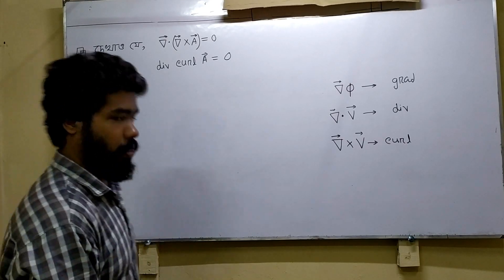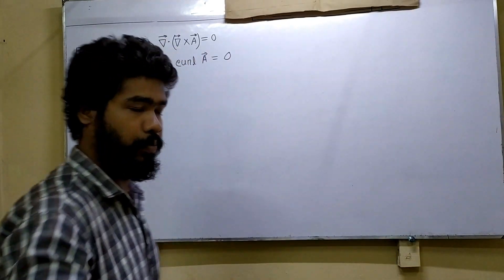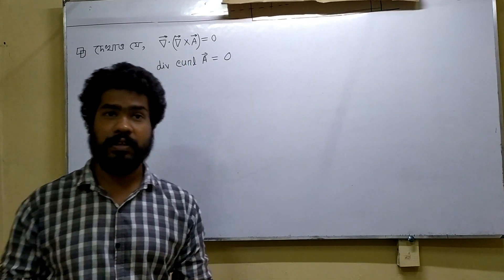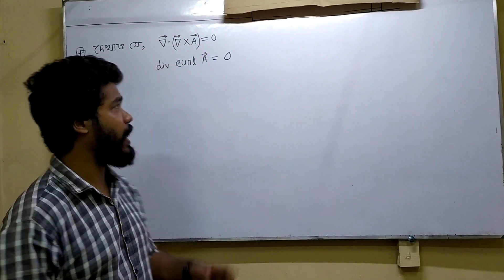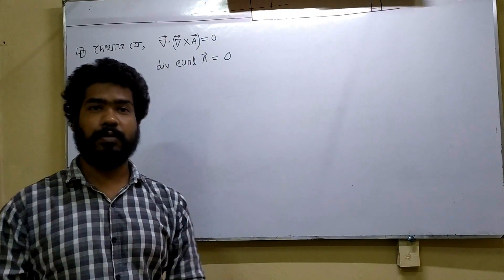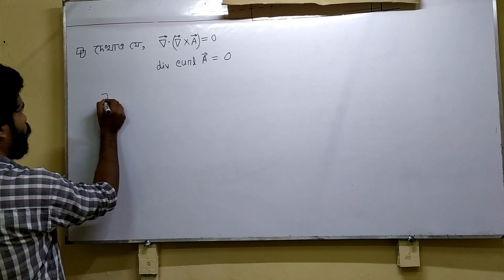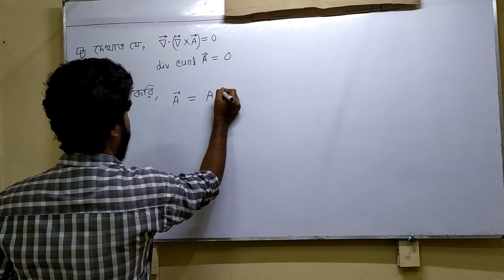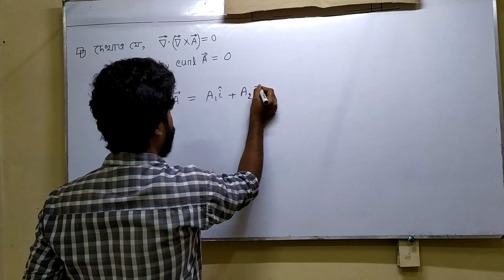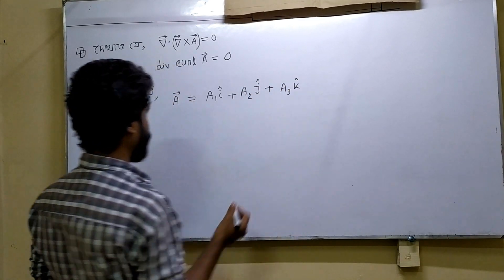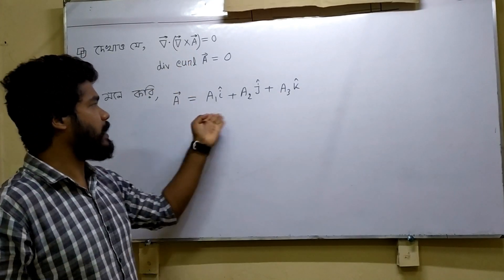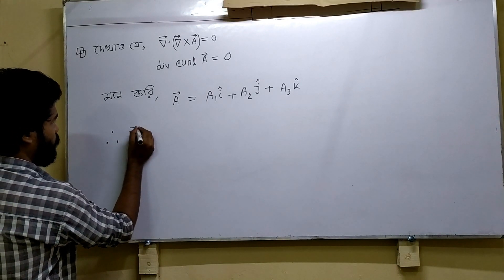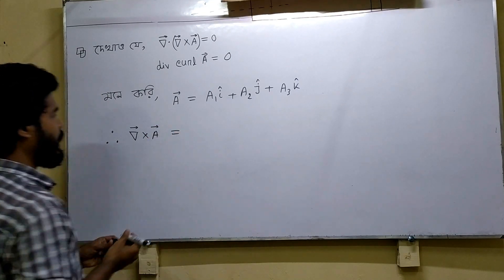Let's start with this question. First, we set up our vector A. So x corresponds to i, y corresponds to j, and z corresponds to k. We can write that A is equal to a1 i-vector plus a2 j-vector plus a3 k-vector. This is the general form of vector A in component notation.